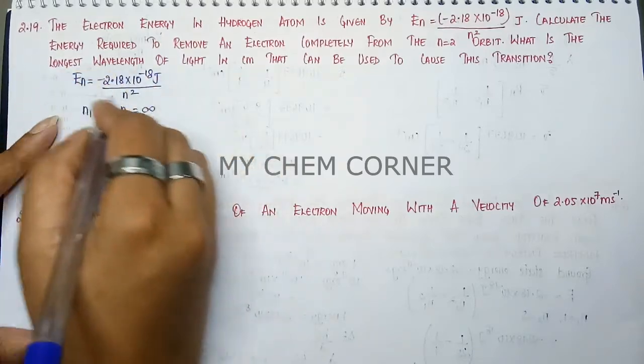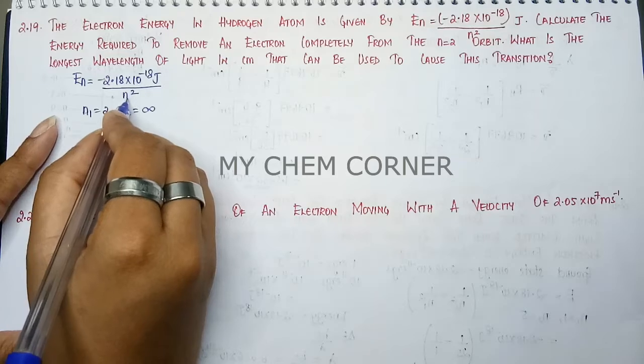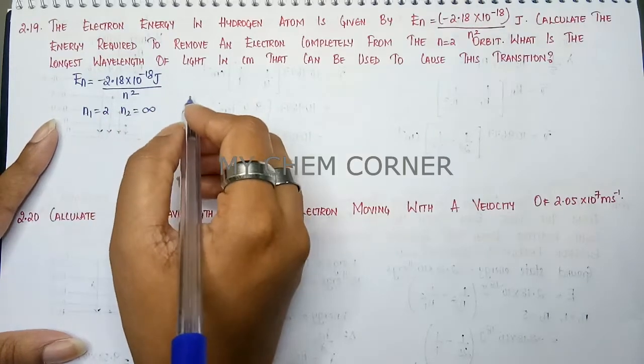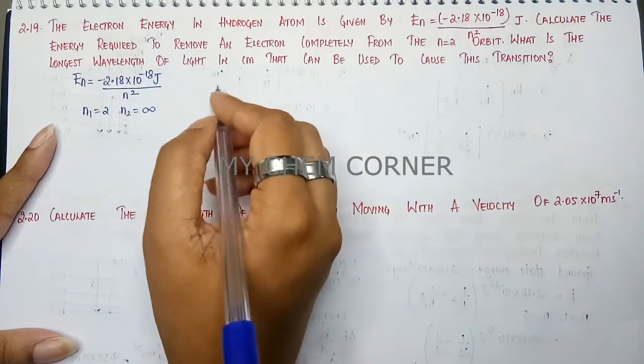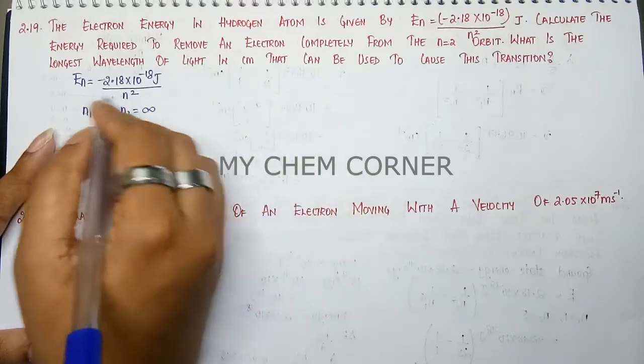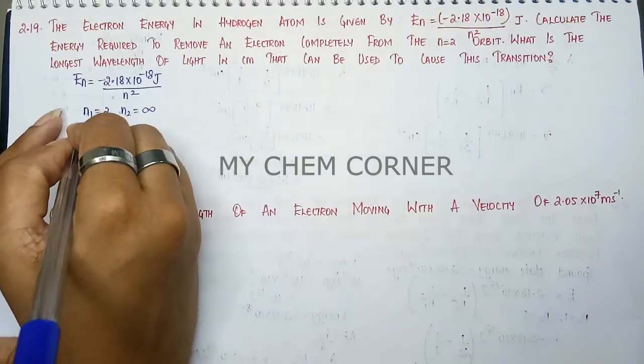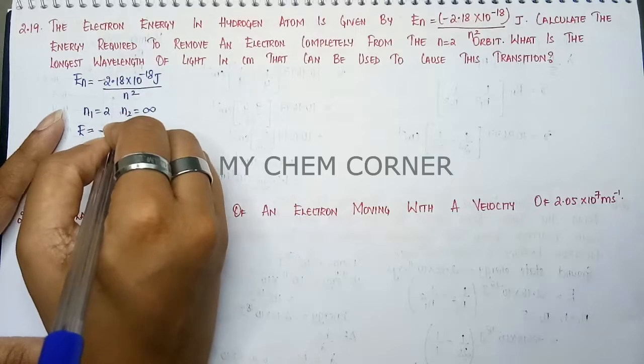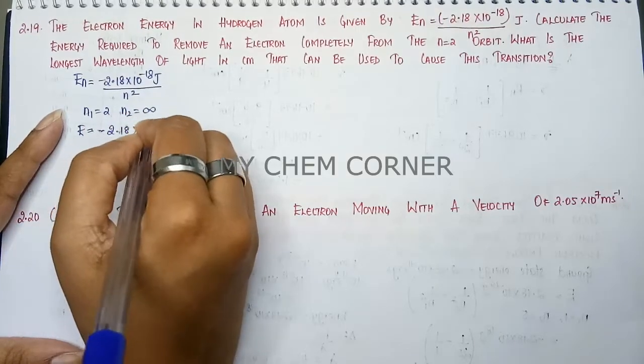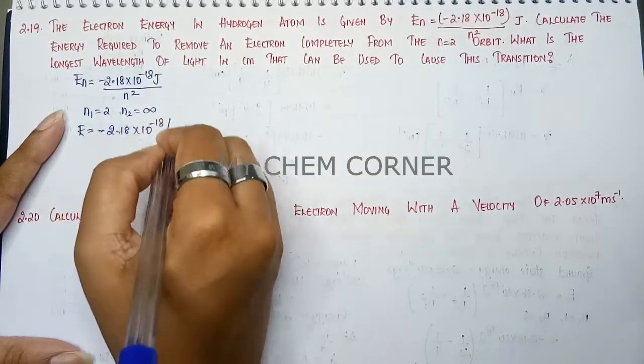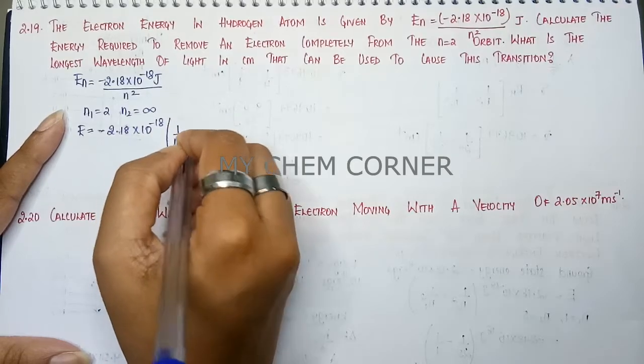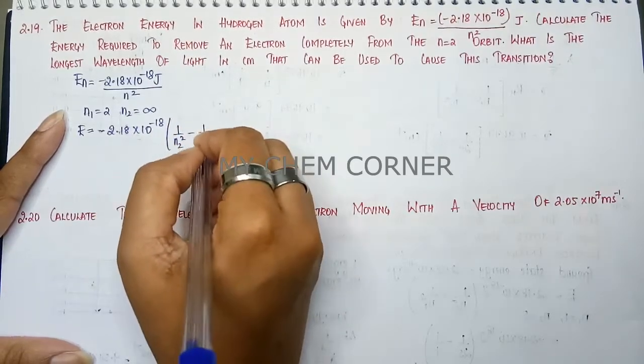So here, when we are using this particular formula, N square will be split as 1 by N2 square minus 1 by N1 square. Then it will become energy term is going to be changed here. This will give 2.18 times 10 to the power minus 18 into 1 by N2 square minus 1 by N1 square.